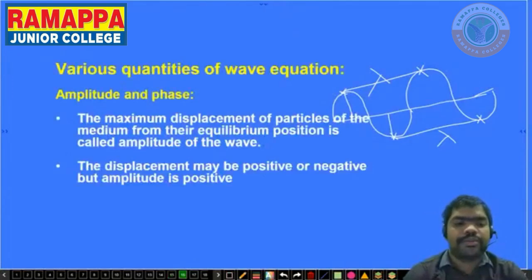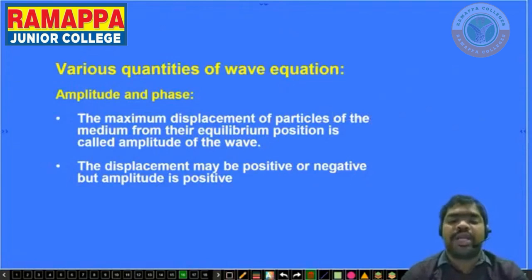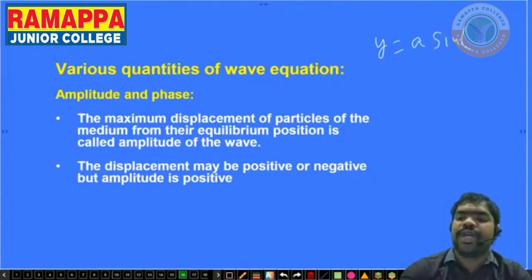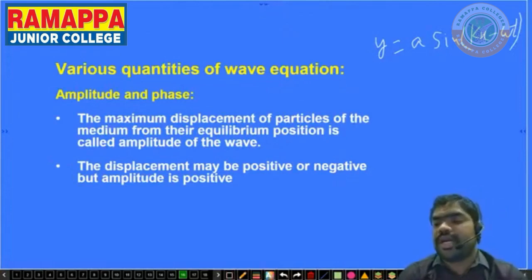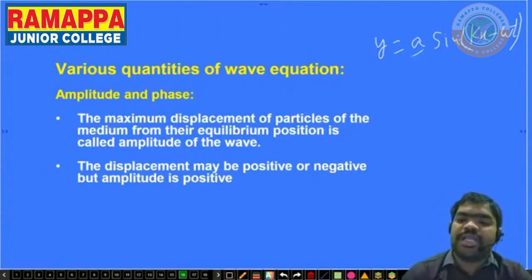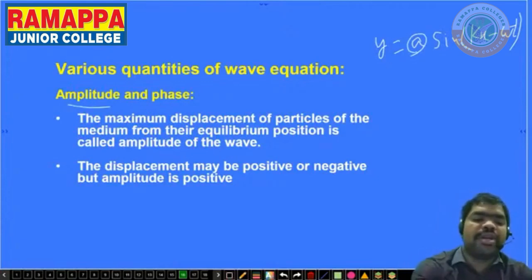Next, the various quantities in the wave equation y = A sin(kx − ωt). Here A is amplitude, k is wave number, x is position, t is time, and ω (omega) is angular frequency. First: A is amplitude.